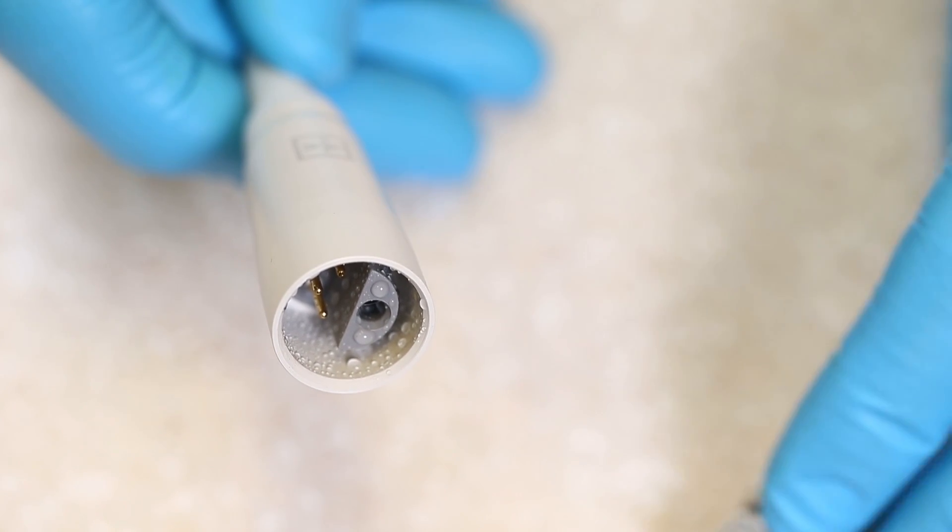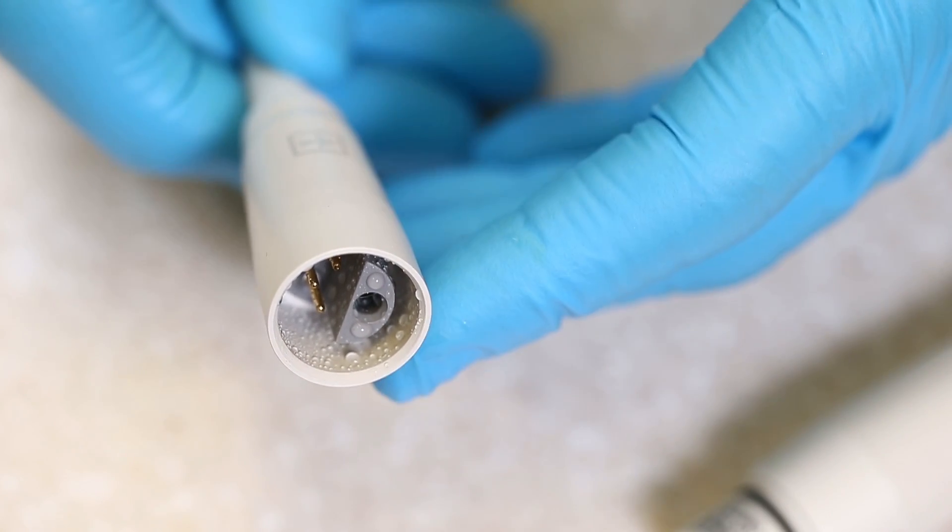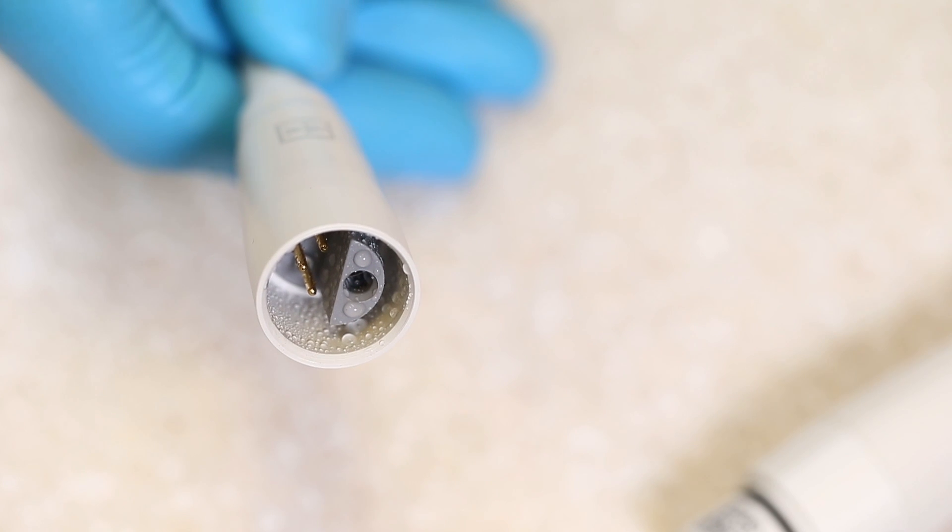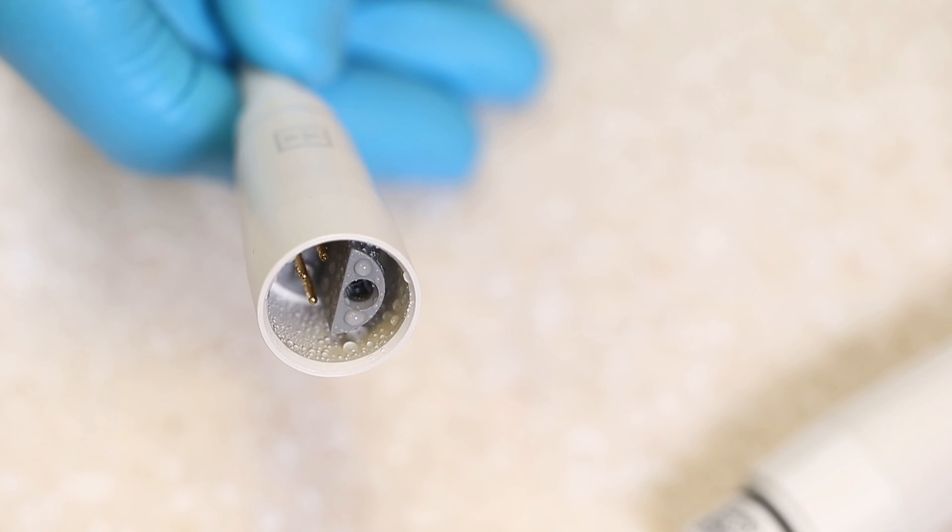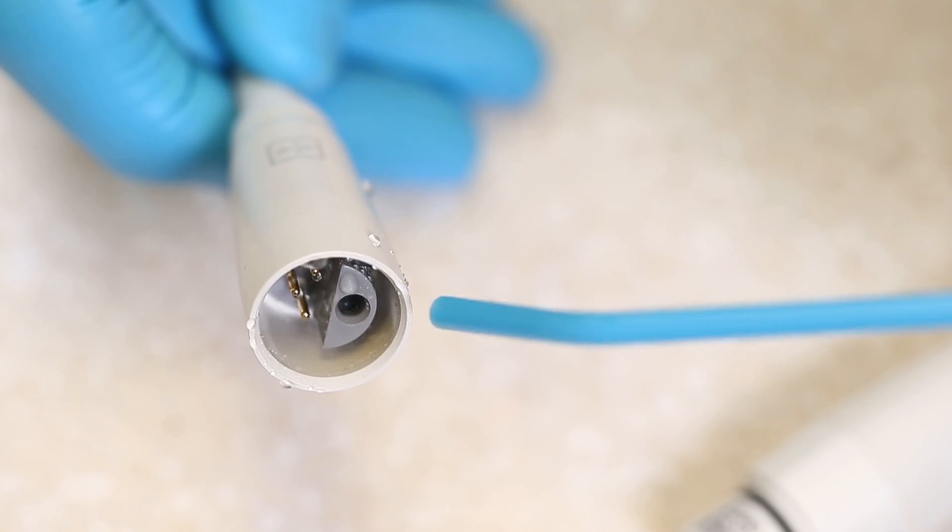If you are using the correct tip and it is not worn down, the problem may be that moisture has gotten on the connections between the handpiece and the cord. If this is the case, thoroughly dry the connections until all moisture is gone.